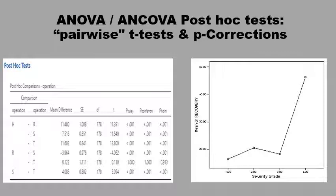ANOVA would tell you that there are some differences in the dependent variable depending on the different variables, but it wouldn't tell you which ones differ. In order to determine which of the four variables is actually different from the others, you would have to conduct pairwise t-tests: between the first and second, first and third, first and fourth, second and third, and third and fourth. You would do six different tests for four variables. So you would have multiple testing, each with a p-value that needs to be adjusted using the Tukey, Bonferroni, or whichever technique you prefer.